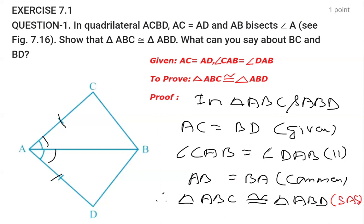Once the triangles are congruent, they're asking what we can say about BC and BD. BC and BD are corresponding sides of these congruent triangles, so we can say BC equals BD. We must write the reason: CPCT—Corresponding Parts of Congruent Triangles. This is how this question is proved.